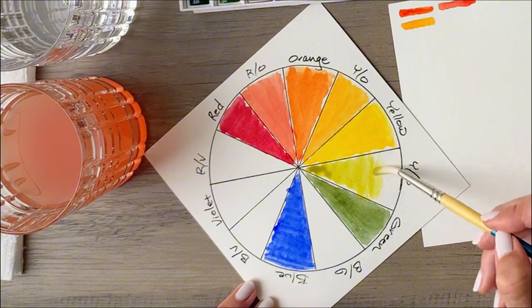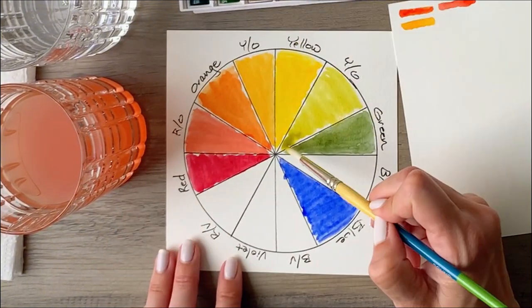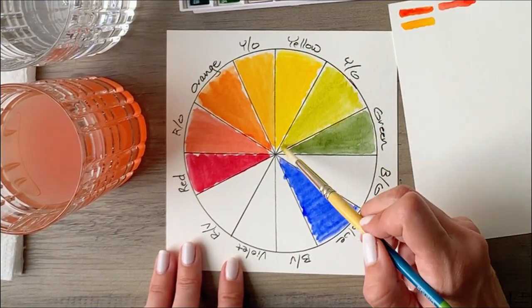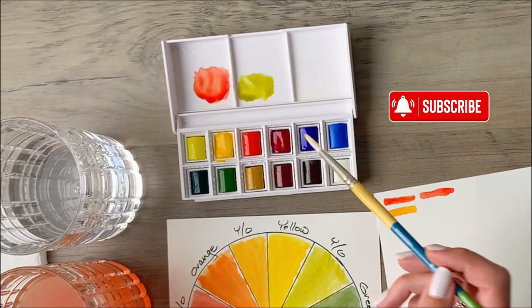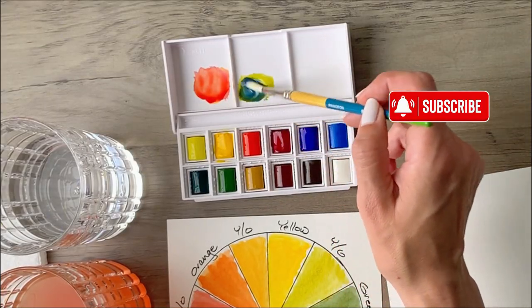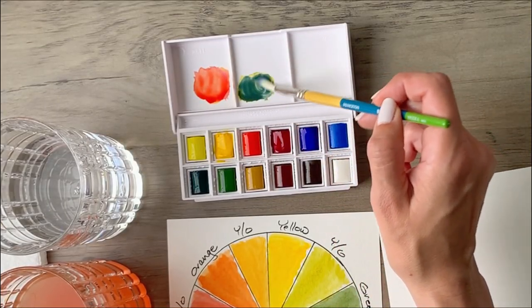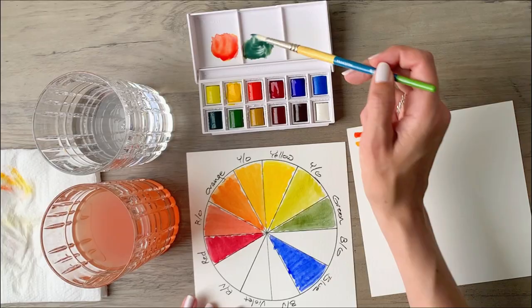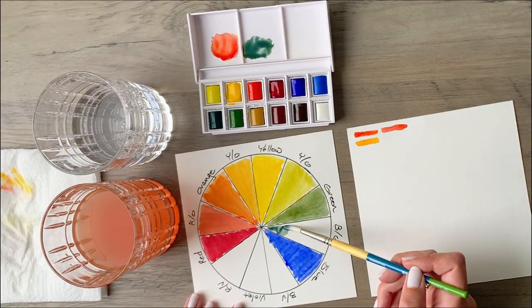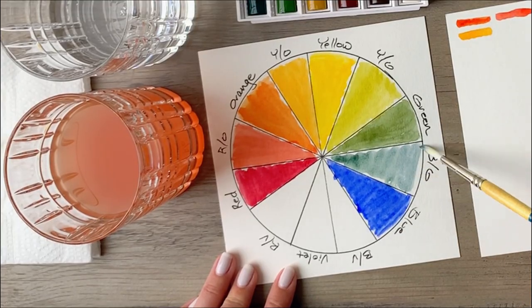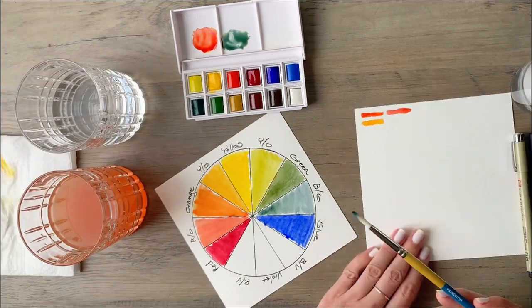You're starting to get a really nice picture of color theory coming to life before your very eyes. Next, you'll add some blue to that same mixture and this will make more of a blue green. This is one of my favorite colors. It's just the perfect combo of the blue and the green.